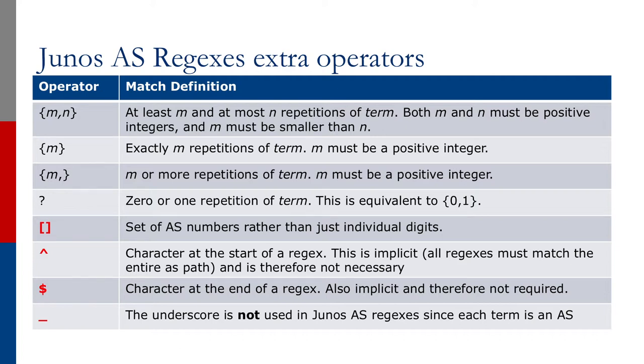The hat sign or the caret will match at the start of the regex similar to Cisco. But for Juniper, it's implicit because all regular expressions must match the entire AS path in Junos. So therefore, the hat sign is not necessary and is implicit in every regular expression. Similarly, the dollar sign must match at the end of a regex and it's also implicit, so it's therefore not required. Because each term is a full AS, the underscore is not used in Junos regular expressions because each term is matched as an individual atom.